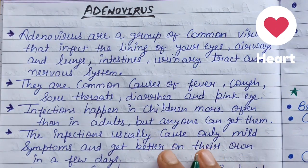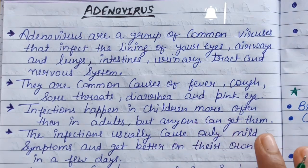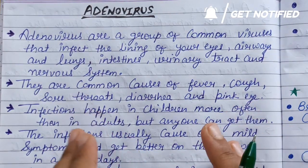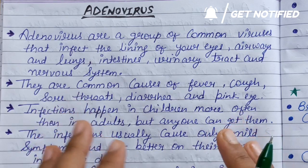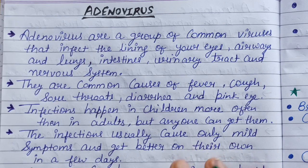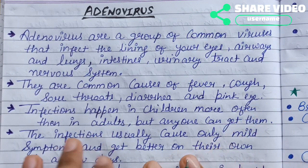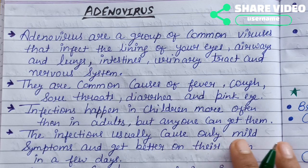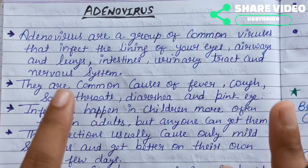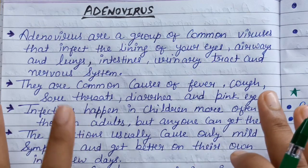Infection happens in children more often than in adults. However, anyone can get it from adenovirus — whether it's a baby, whether it's a child, or whether it's an adult.